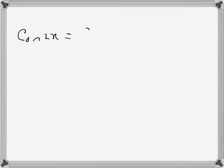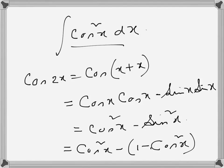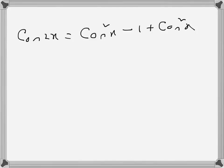again cos²x - 1 + cos²x. I am taking the bracket out, so it's becoming 2cos²x - 1. Or cos²x can be written as ½(1 + cos 2x).